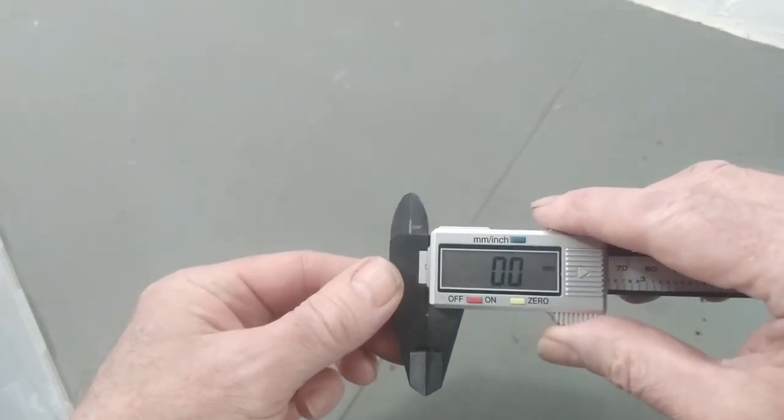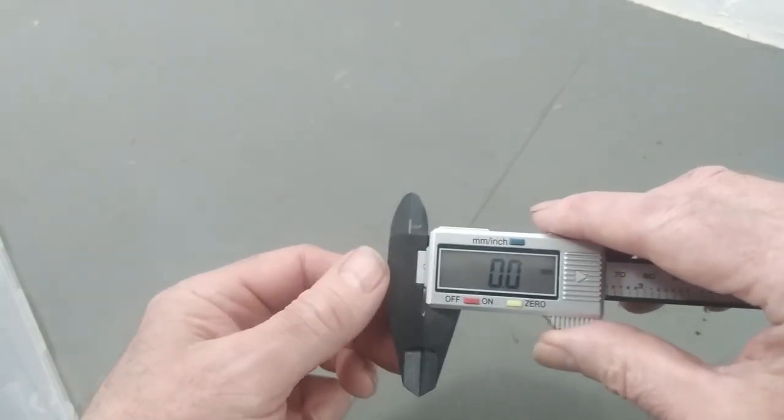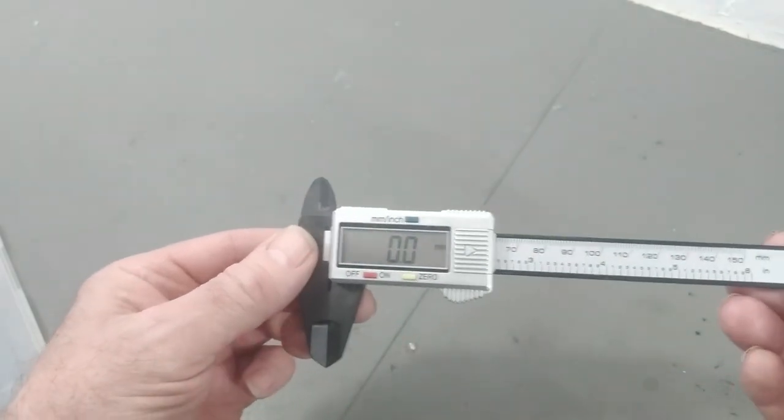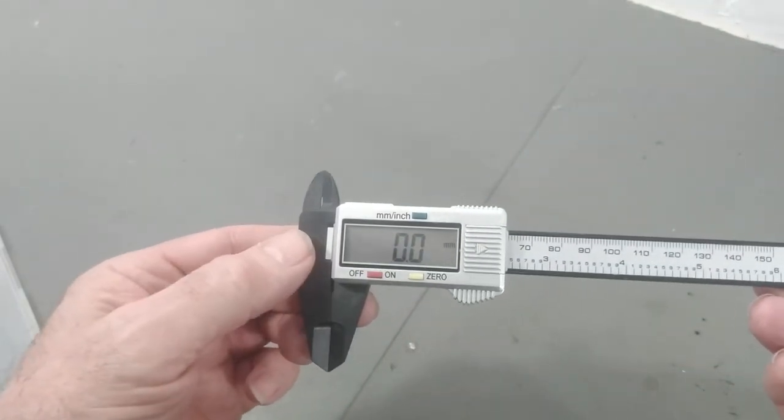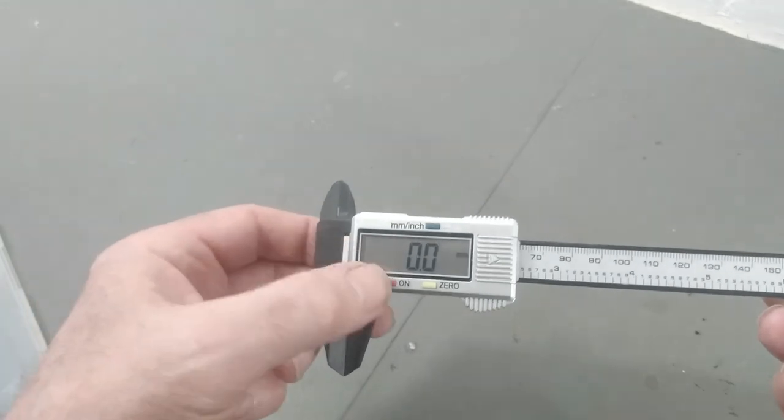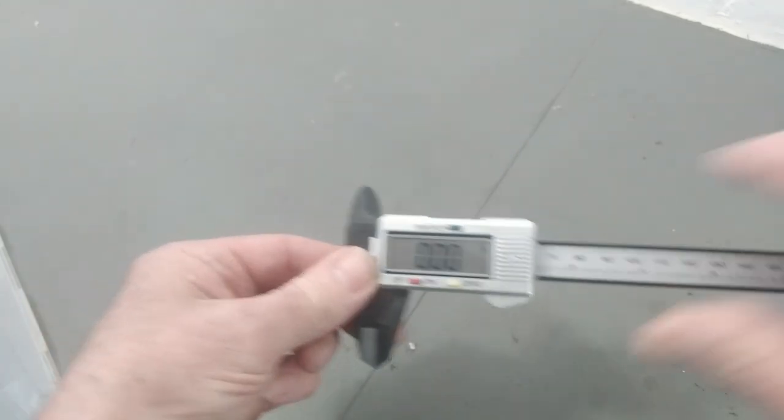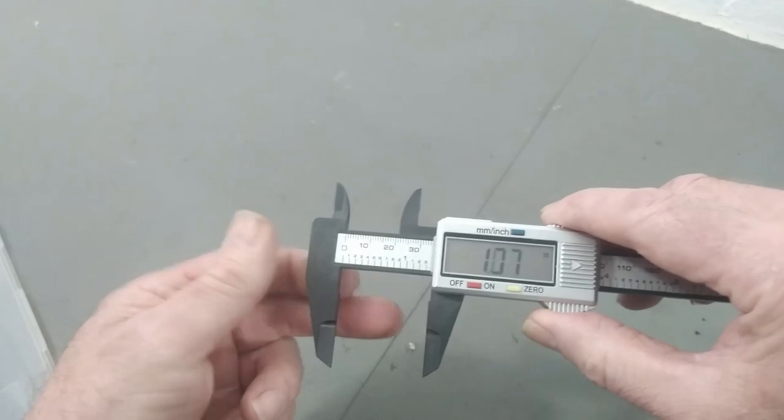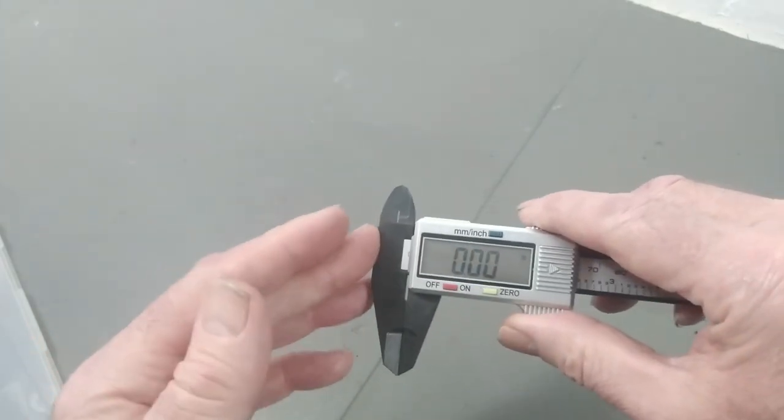So easy to use. Shut back down and that will shut off automatically. Switch on or off, metric to imperial. Fantastic little bit of kit guys.